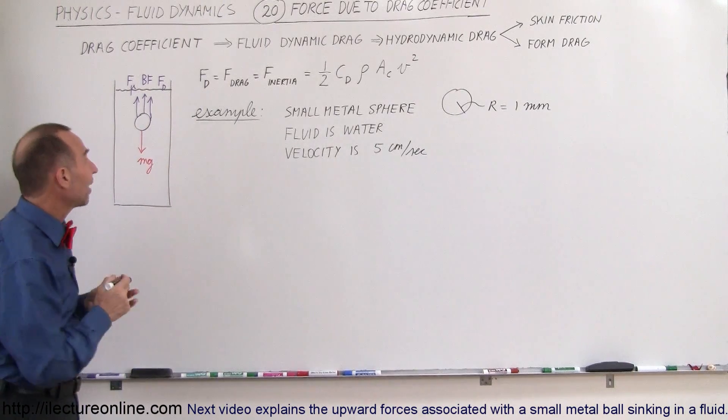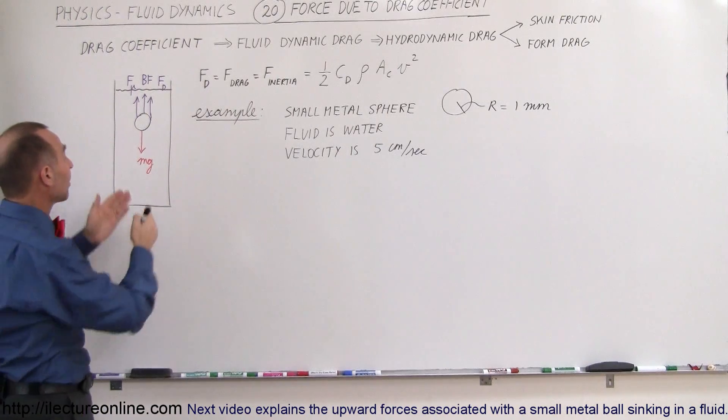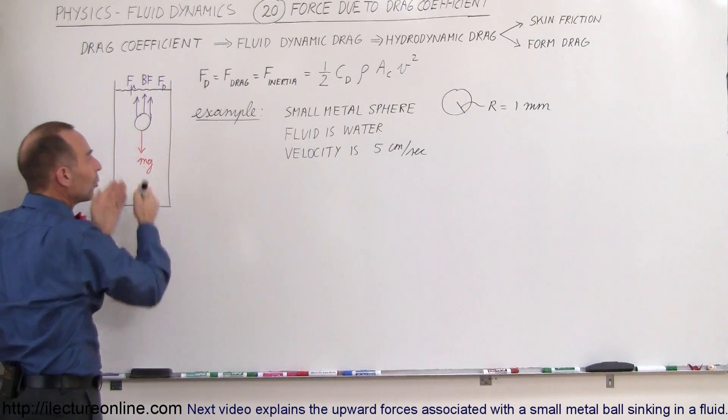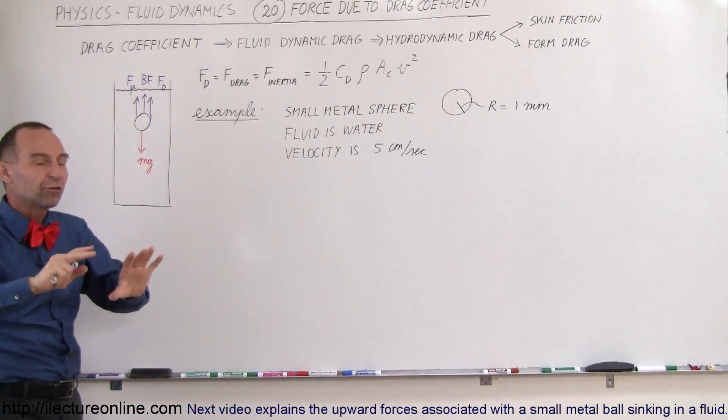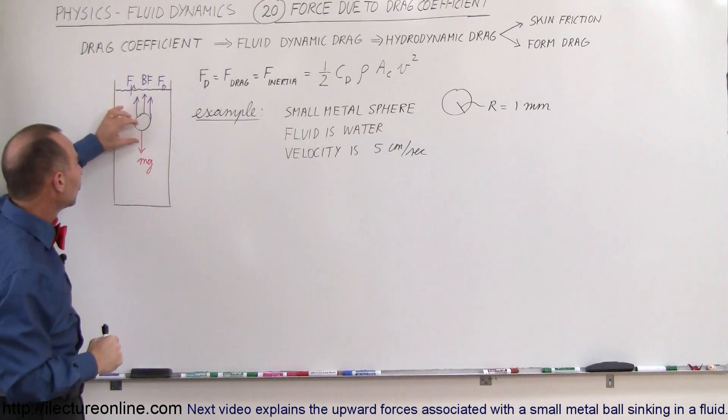So let's simply find the force associated with the drag coefficient. The drag coefficient is caused by the object having to push aside fluid as it goes down. It has to push the fluid out of the way, so it has to give momentum to the fluid. It has to push it out of the way, so there's all kinds of forces involved to be able to do that.